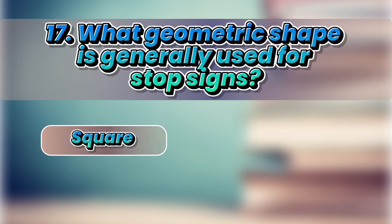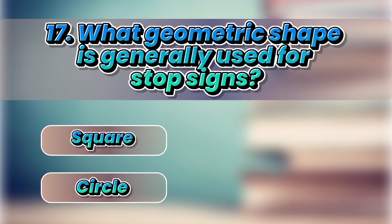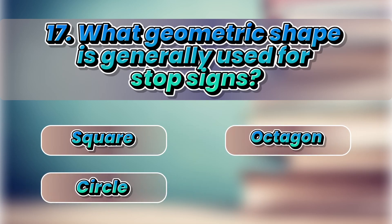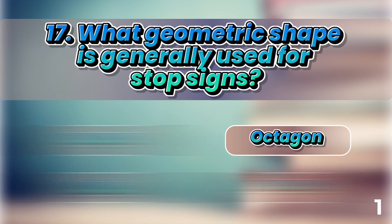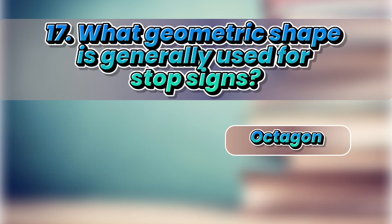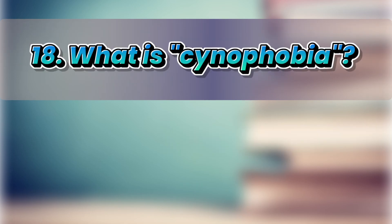What geometric shape is generally used for a stop sign? Square... It's Octagon.